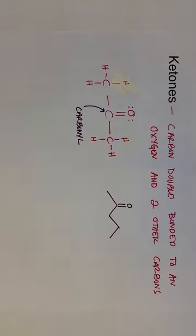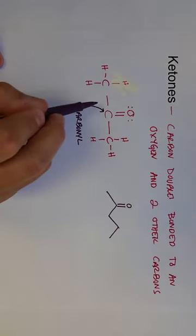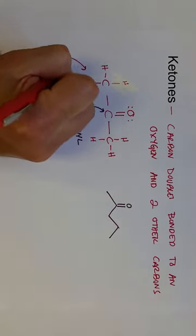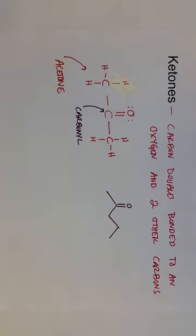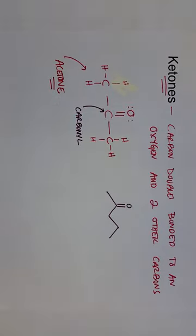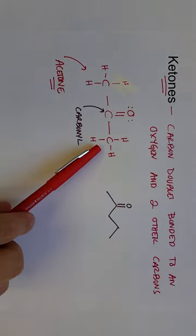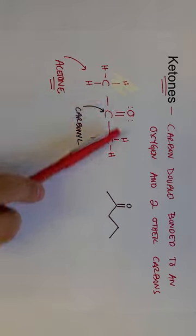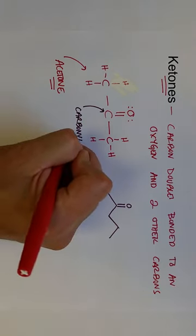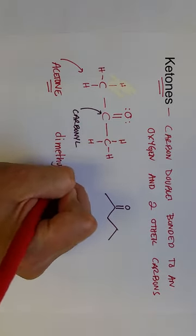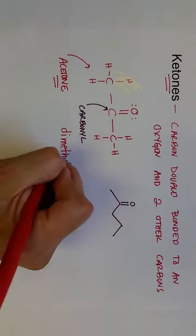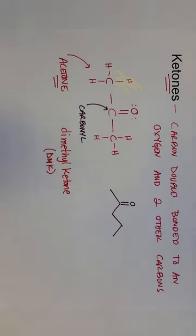For naming ketones there are a couple of different ways. This is a very common ketone — acetone — so that would be its common name. Ketones end in '-one', just like alcohols end in '-ol'. Another way to name this is by naming both side groups: these are two methyls connected to the carbonyl, so you can also call this dimethyl ketone. DMK is often an abbreviation for acetone because it's dimethyl ketone.